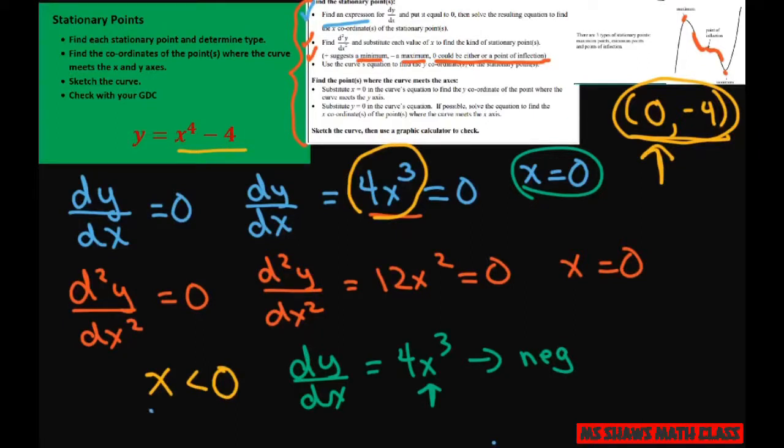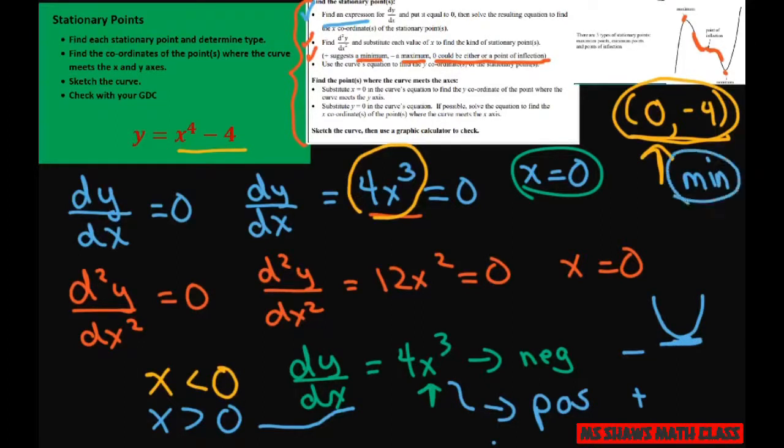If I plug in a positive of this, I'm going to get a positive number. So we're switching from negative to positive. So a negative gradient to positive, that's going to be a minimum. So this is a minimum stationary point. That's the type.